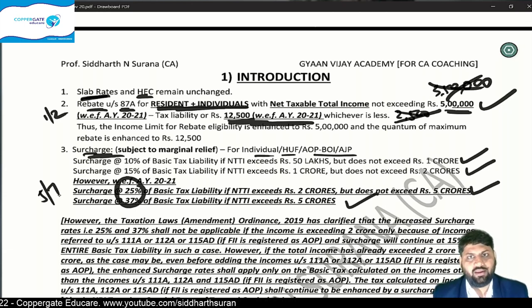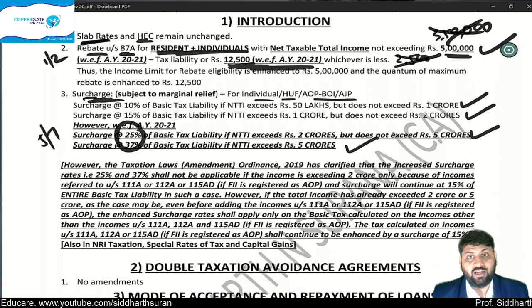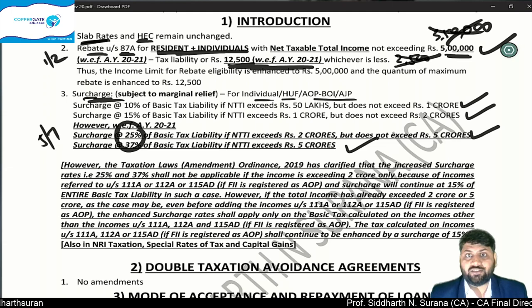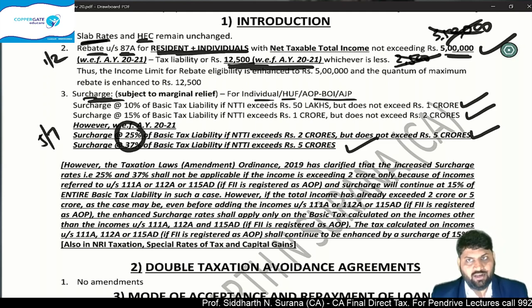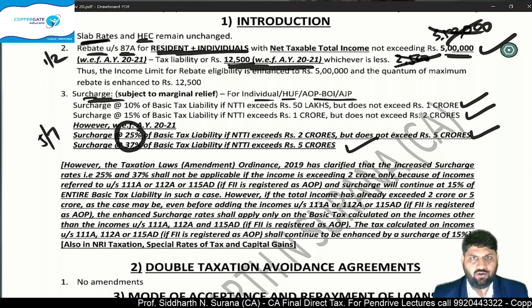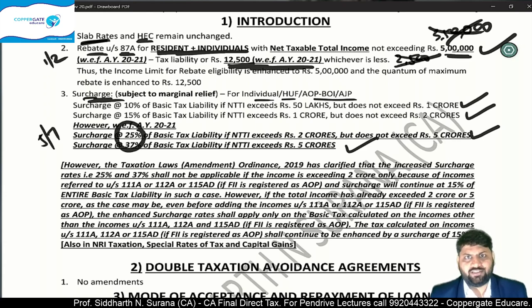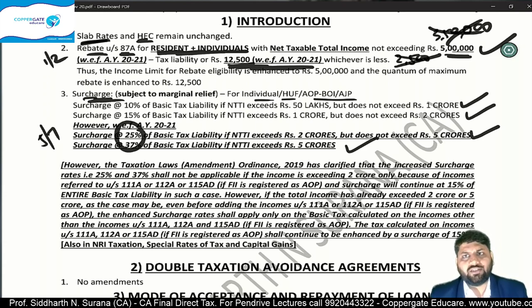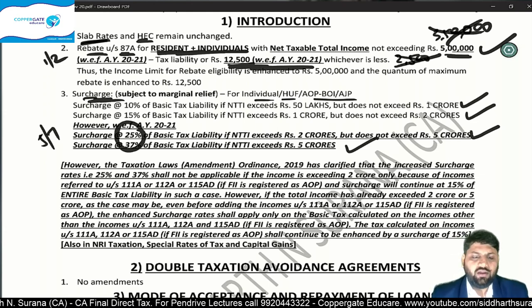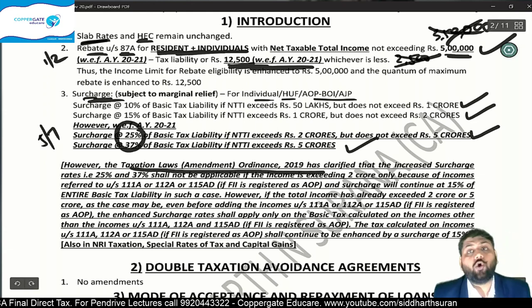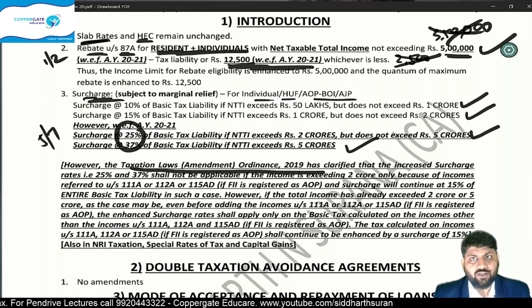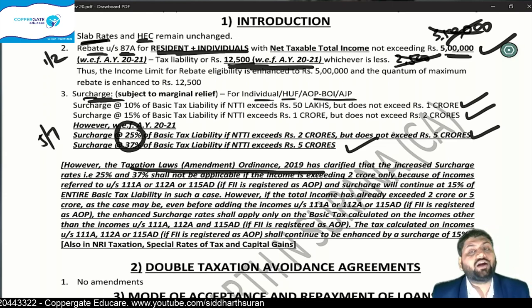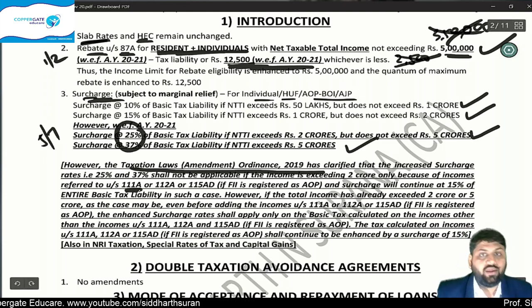However, assesses started protesting — saying that the surcharge rates of 25% and 37% are very high, even higher than what companies and firms pay (firms: 12% after 1 crore; domestic companies: 7% after 1 crore, 12% after 10 crore). In response, the Taxation Laws Amendment Ordinance 2019 brought a change — primarily affecting the MAT chapter, but also making amendments related to surcharge for income taxable under Section 111A (short-term capital gains on listed equity/units), Section 112A (long-term capital gains on stock market), and Section 115AD (FIIs registered as AOP).